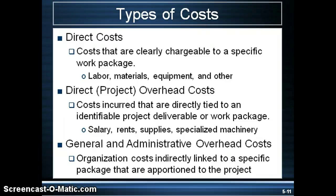Labor to do that work — to install all those items — is a direct project cost. The equipment used to do the work, such as bulldozers for excavating, forms for the concrete, compressors for air tools and the tools themselves, are all considered direct project costs. Direct project overhead costs are a little different. These are overhead costs such as salary for the project manager, temporary rental space for the project team, etc.